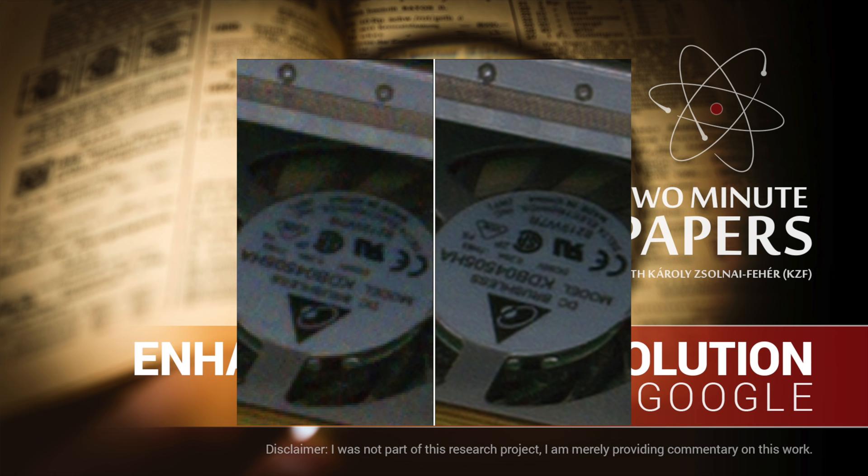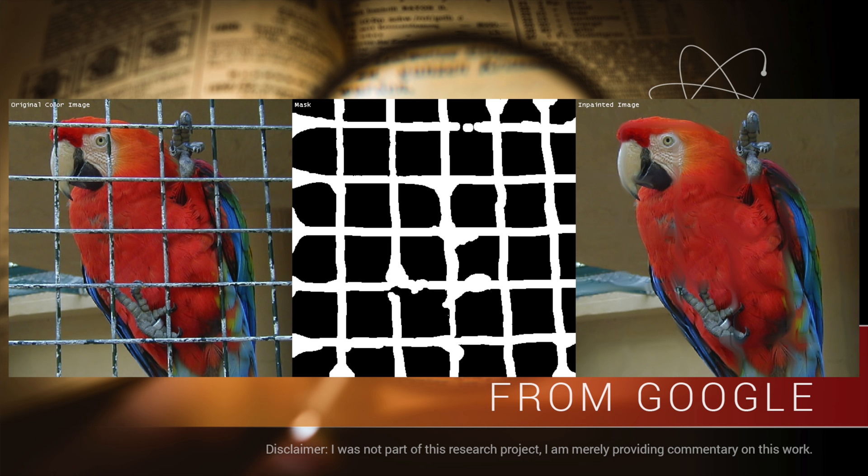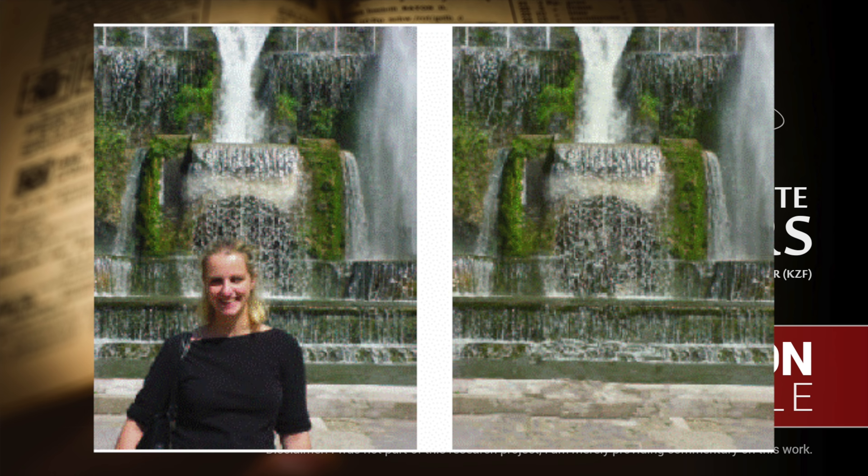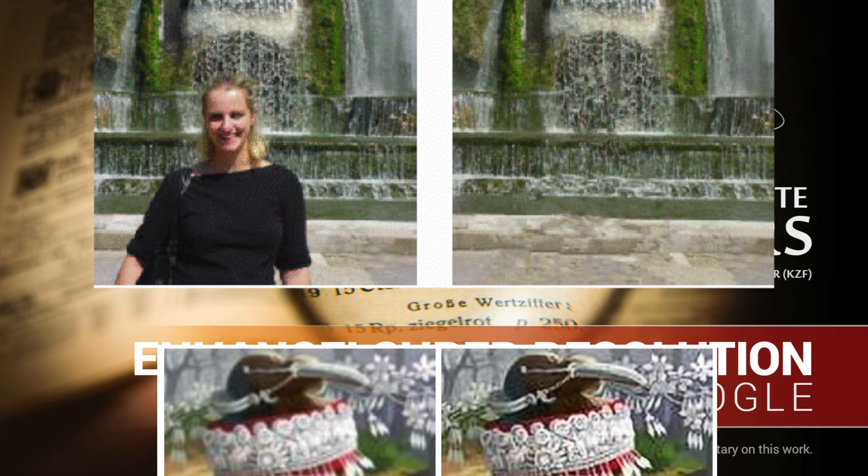How could one mathematically fill in the details when these details are completely unknown? Well, that's only kind of true. Let's not confuse super-resolution with image inpainting, where we essentially cut an entire part out of an image and try to replace it leaning on our knowledge of the surroundings of the missing part. That's a different problem. Here, the entirety of the image is known, and the details just require some enhancing.